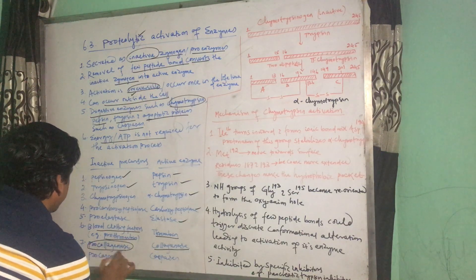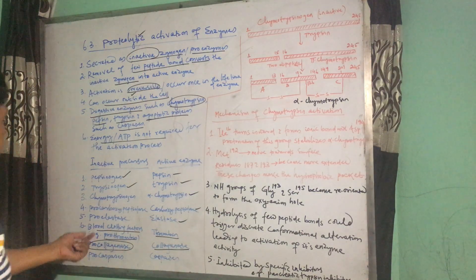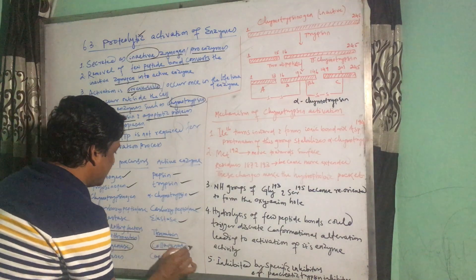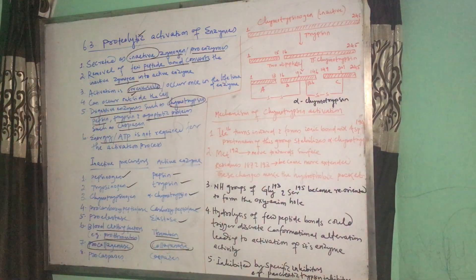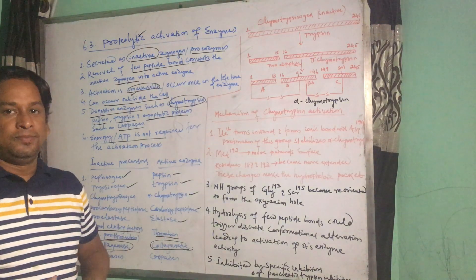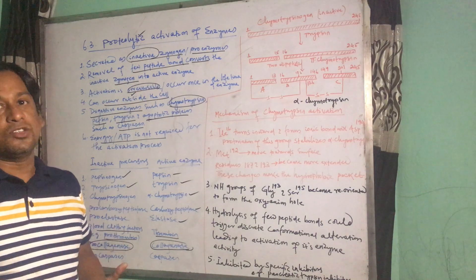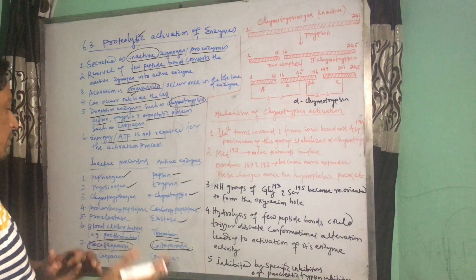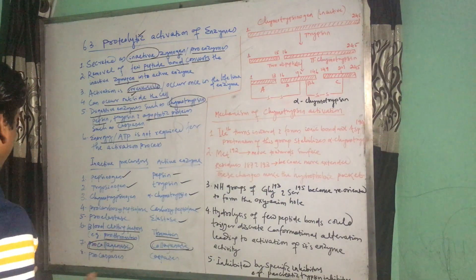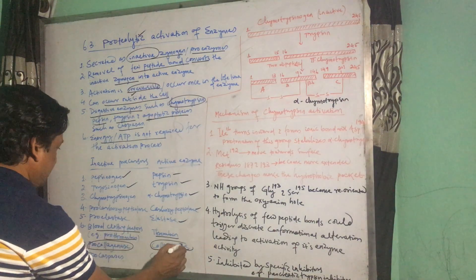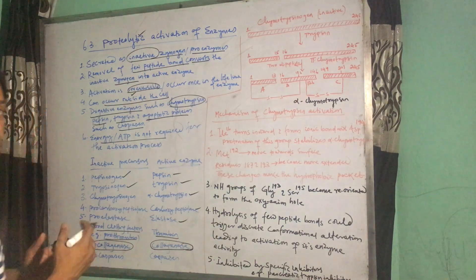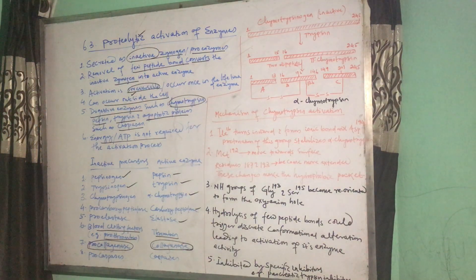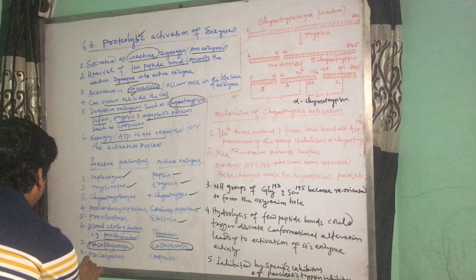Pro-collagenase becomes collagenase upon activation, and collagenase is involved in the degradation of collagen. For example, a lot of collagen needs to be degraded in the uterus of a female after the birth of a baby, and in that way it helps to restore the functionality of that particular organ of the body.